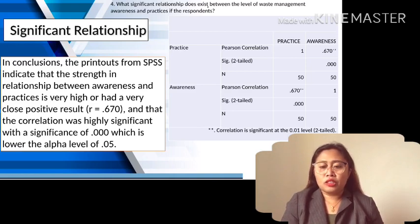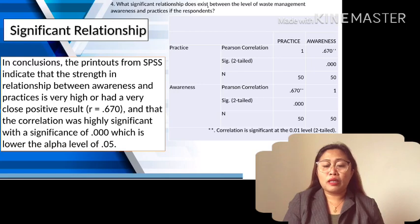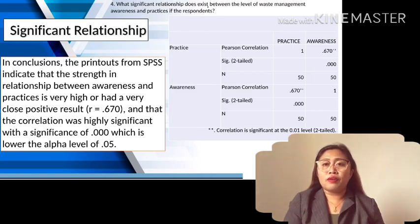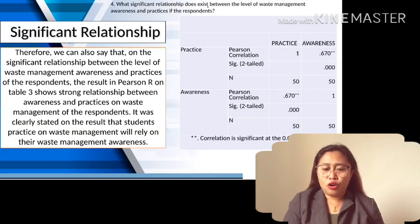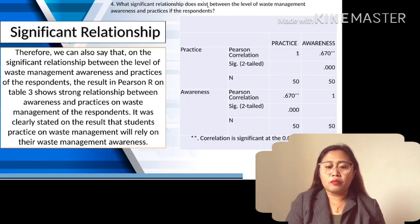As shown on table 3, there is a significant relationship between waste management awareness and practices. The printouts from SPSS indicate that the strength of the relationship between awareness and practices is very high, with a close positive result of R equal to 0.670, and the correlation was highly significant with a significance of 0.000, which is lower than the alpha level of 0.05. Therefore, the result shows a strong relationship between level of awareness and practices on waste management, indicating that students' practice on waste management relies on their waste management awareness.